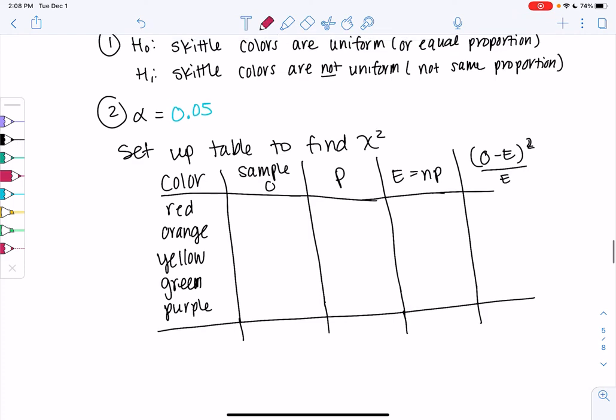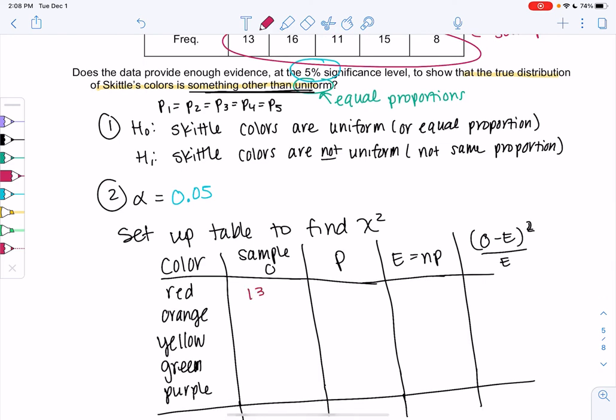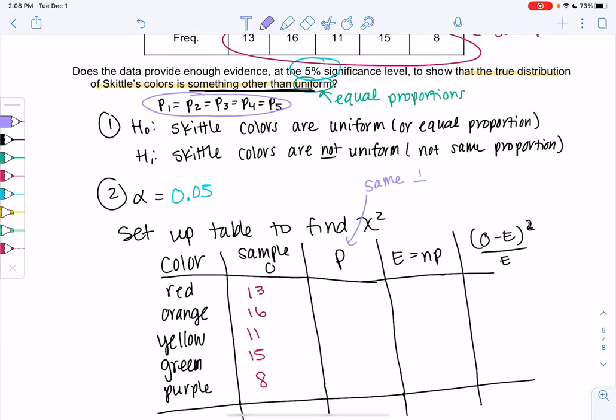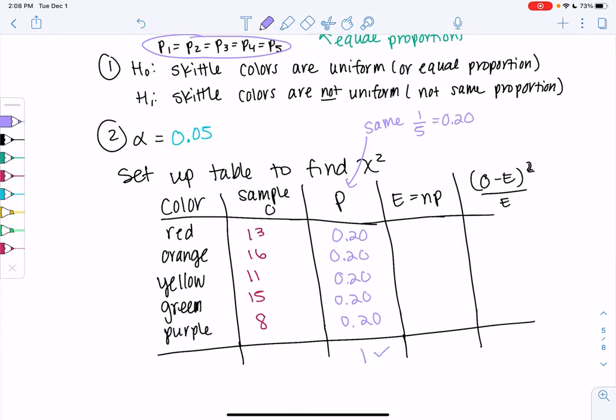Observed in our sample is just what we observed. So 13, 16, 11, 15, and 8. This one's a little tricky because the percent's not given, but we can figure it out. If they're all the same and there's five categories, that means each category needs to be one out of five or 0.2, or 0.2 for 20%. We could check and confirm that these add up to one.